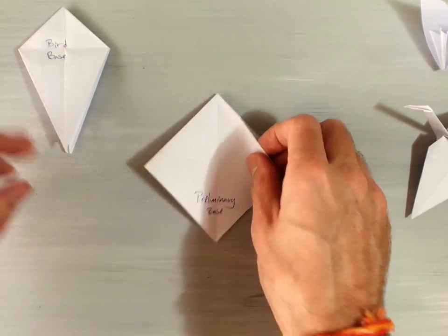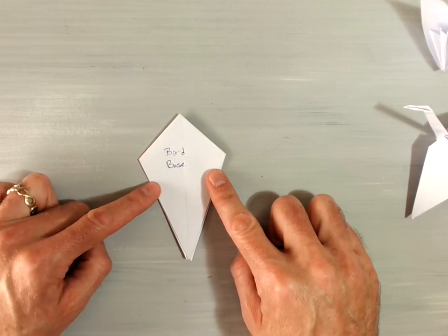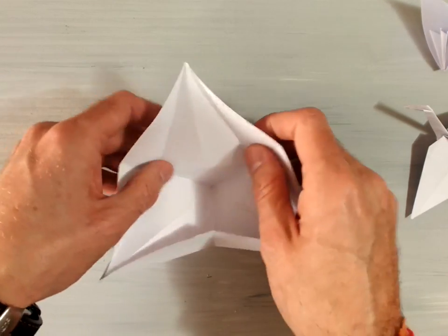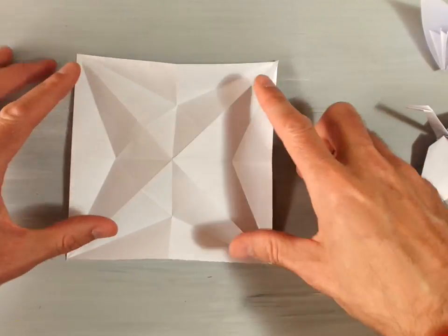Now, as you go on to making more and more complicated origami, this one being the bird base, if I unfold this, you can see a lot more complicated geometry and fractions going on.